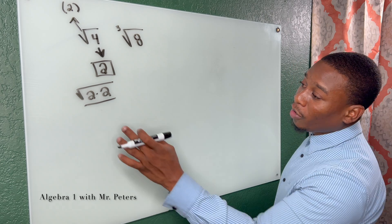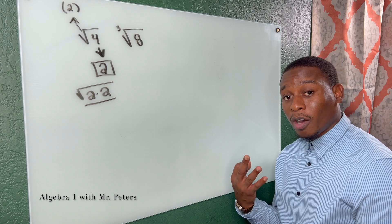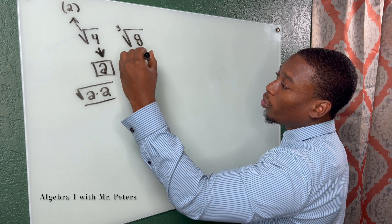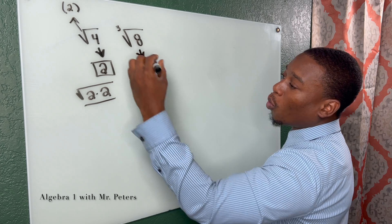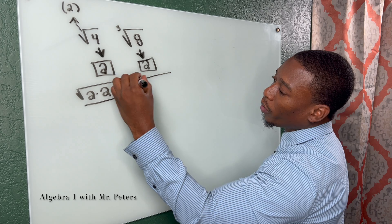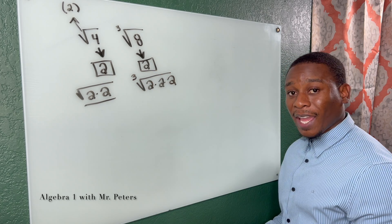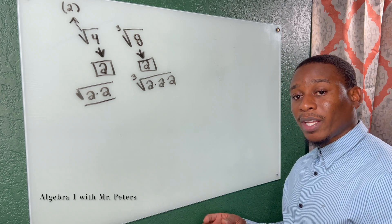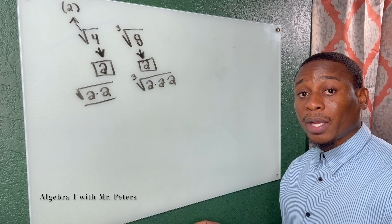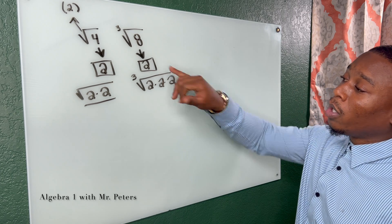When we apply that rule to cube roots, it's a little bit different because instead of pairs we're looking for triplets — three of the same numbers. The cube root of 8 is 2 because 2 times 2 times 2 gives us 8. So when we break down that cube root, multiplying the same number three times, our answer is 2.